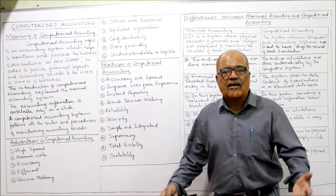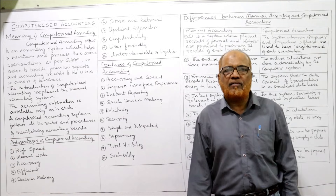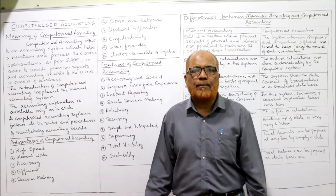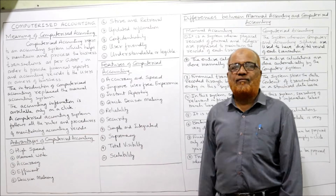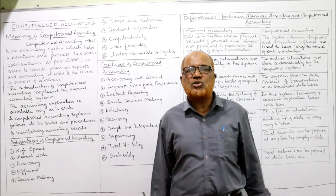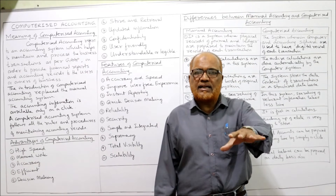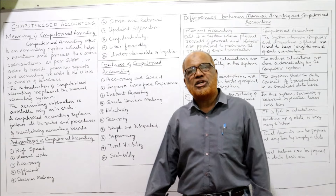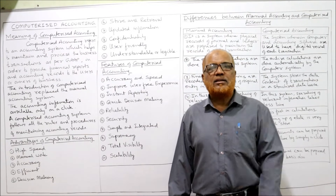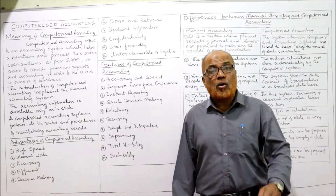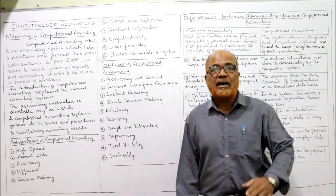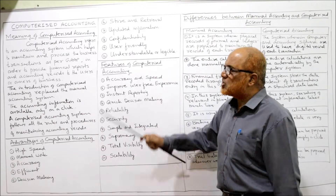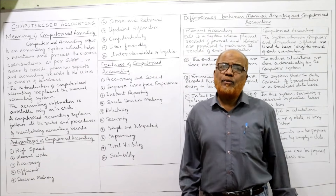The next advantage is store and retrieval — accounting information can be stored on various devices like hard disk or pen drive, and can be retrieved whenever needed. Next is updated information — data stored in computers can be updated from time to time; it is not fixed once entered. Next is confidentiality — data in computerized accounting can be kept confidential using passwords and login information.